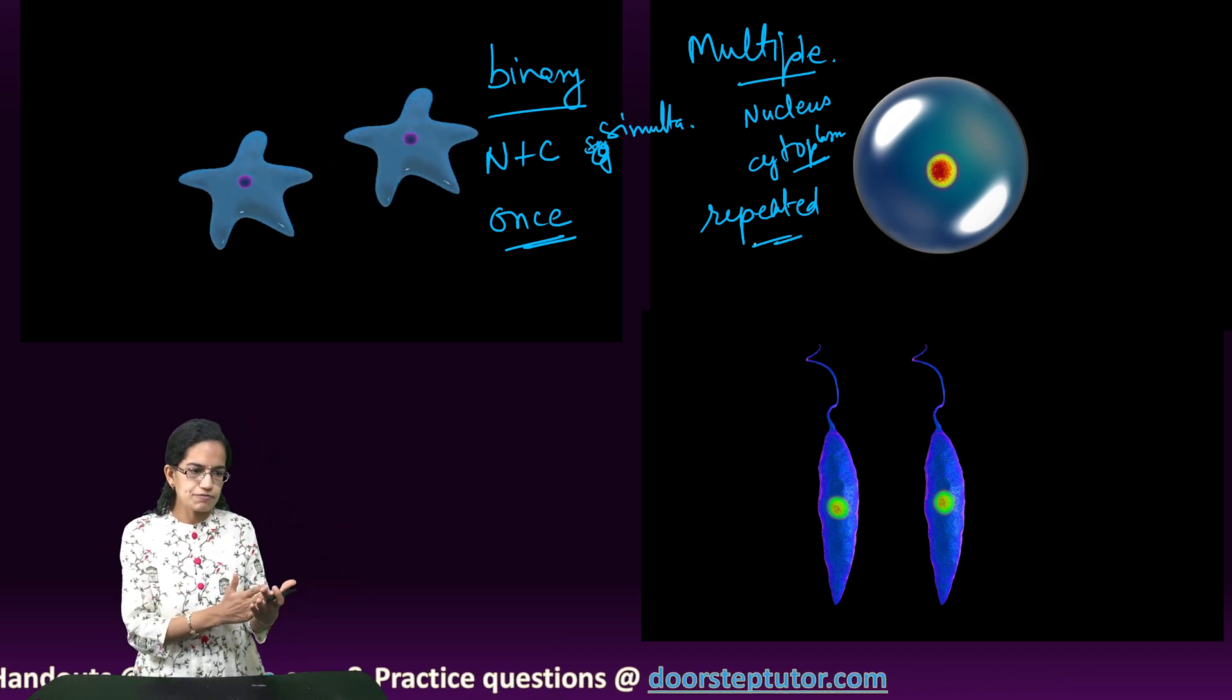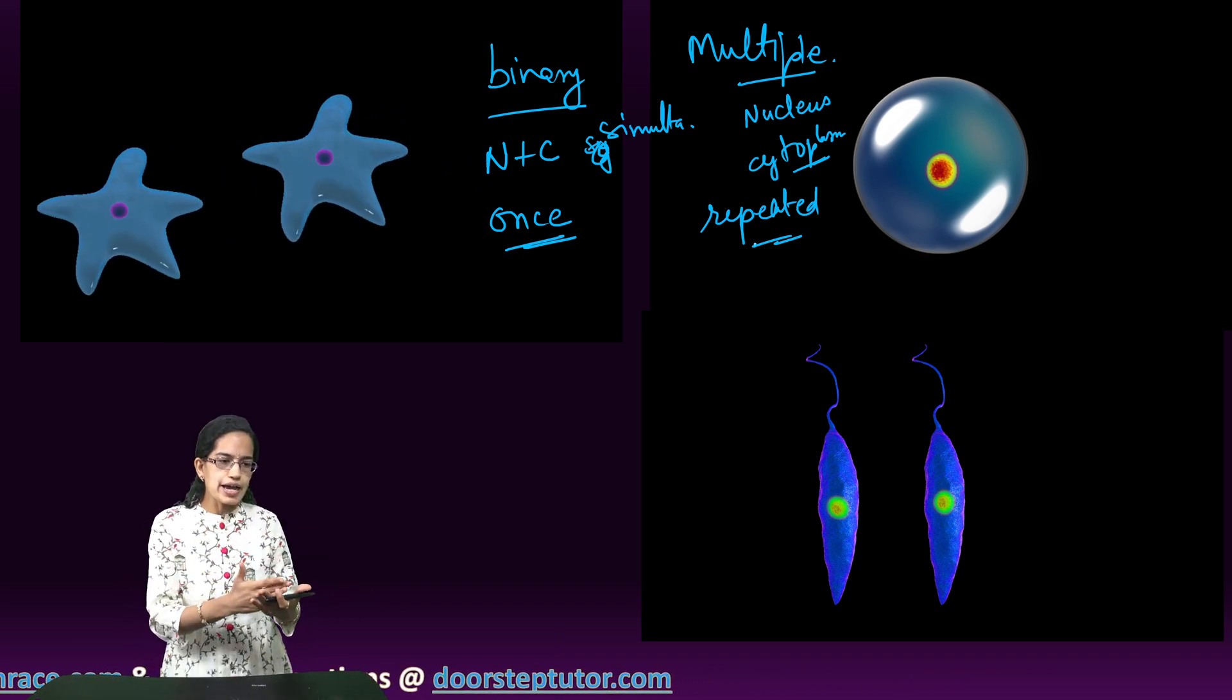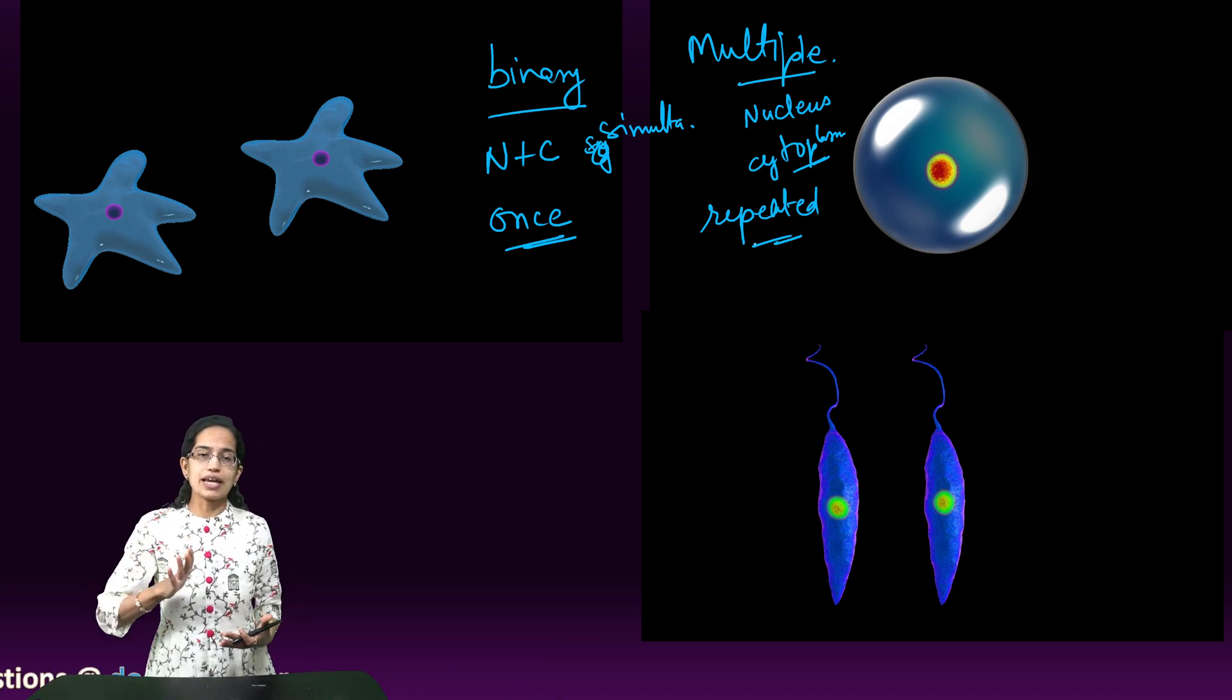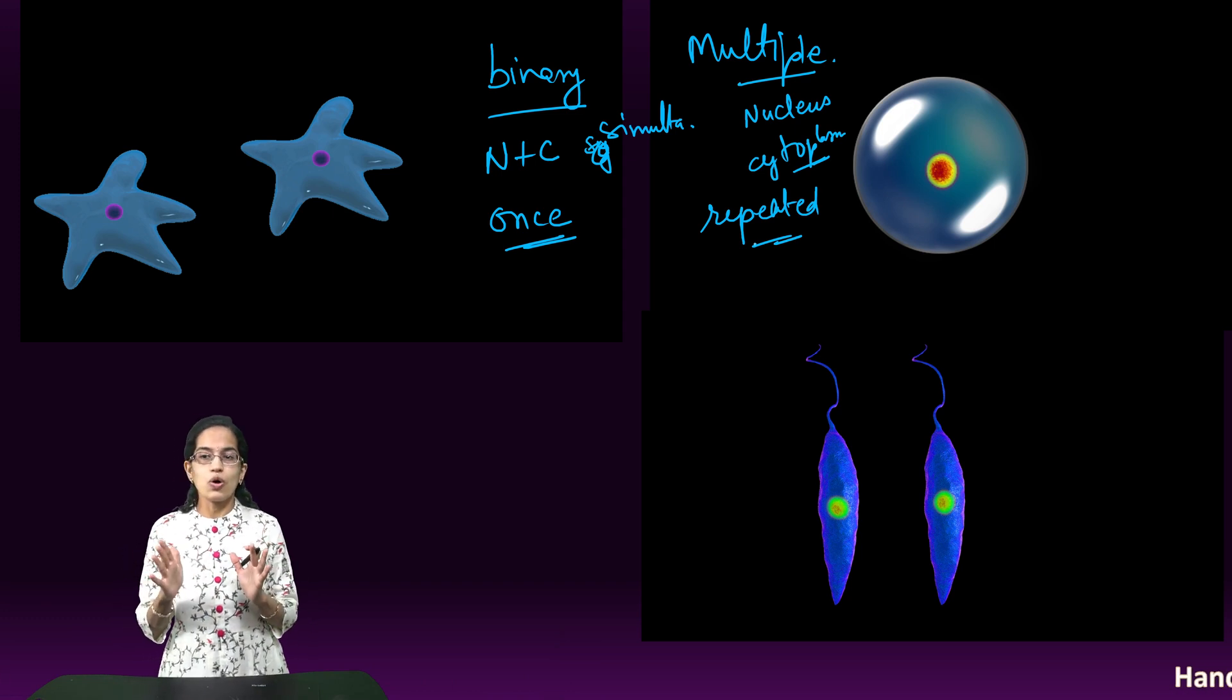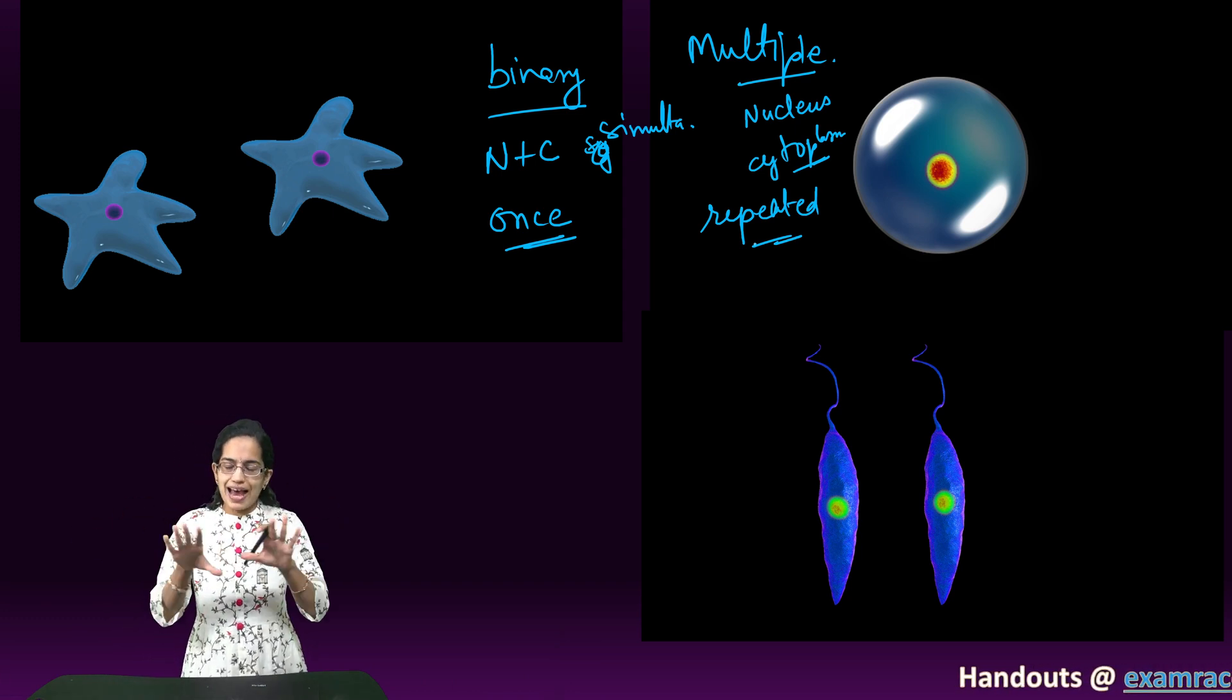And all the cells, be it the binary or the multiple fission, are identical to the parent. So that is a common similarity between the two.